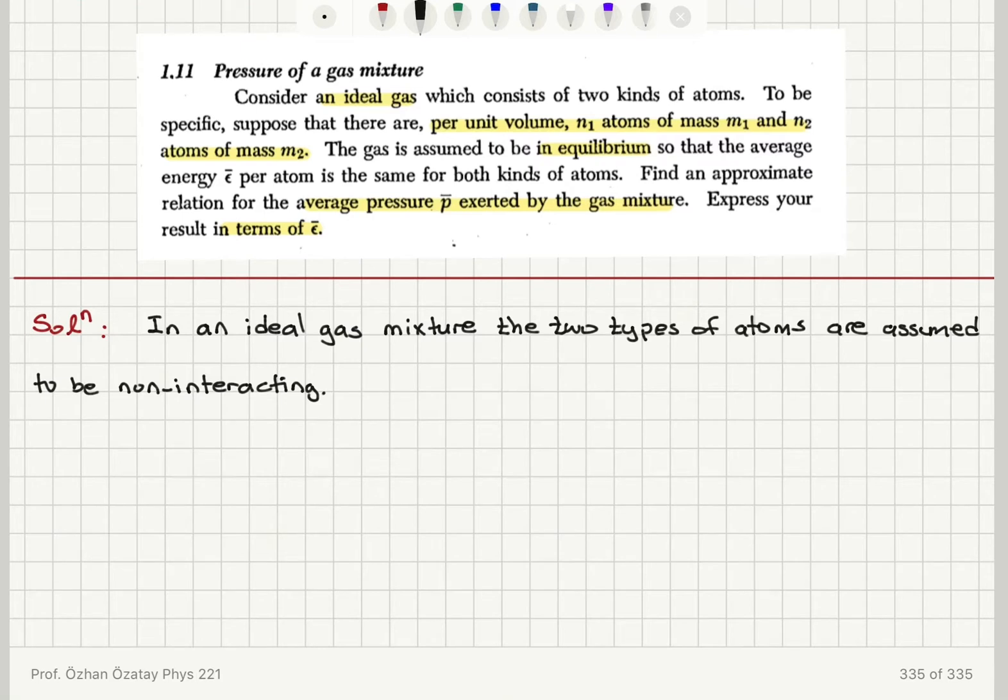Using elementary kinetic theory for an ideal gas, we have shown in the lectures that the average pressure for one type of atom, let's say of type 1 gas, is given by P1 bar equals two-thirds the number of gas molecules per unit volume N1 number density times Epsilon K1 bar, the kinetic energy of the first type of gas molecules.